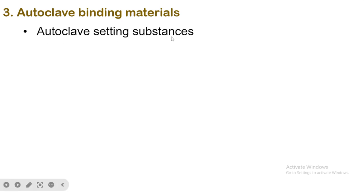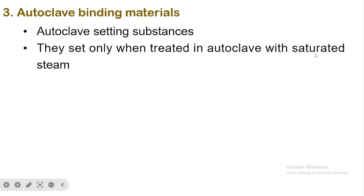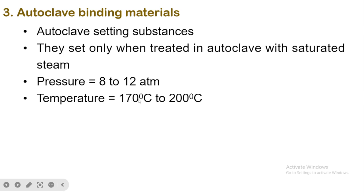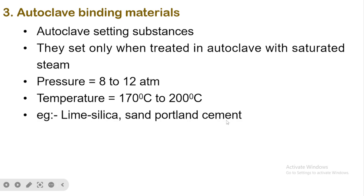Autoclave binding materials, also called Autoclave Setting Substances, set only when treated in an autoclave with saturated steam. The pressure of the steam is 8 to 12 atmospheres and the temperature is 170 to 200 degrees. An example of autoclave binding materials is lime-silica.